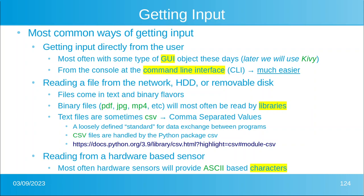Binary files are things like MP4, JPEGs, MP3s, PDFs — that's just a big long coded sequence of zeros and ones. Text files sometimes come in what's called comma separated values. I'll let you read about that; there are some links you can use.